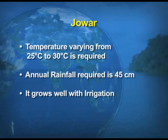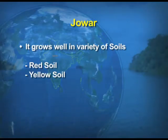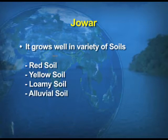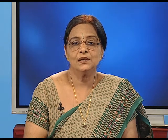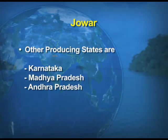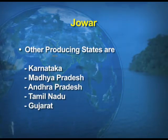Jowar grows well where irrigation facilities are available. It can be grown in a variety of soils — red soil, yellow soil, loamy, and alluvial as well. Maharashtra is the largest producer of Jowar with 51% of India's total produce. Other producing states include Karnataka, Madhya Pradesh, Andhra Pradesh, Tamil Nadu, and Gujarat. You can see a visual of the Jowar crop on screen.